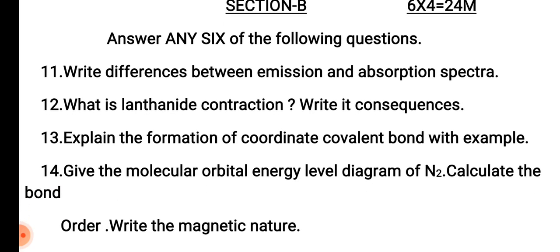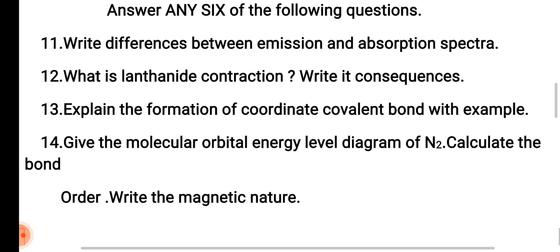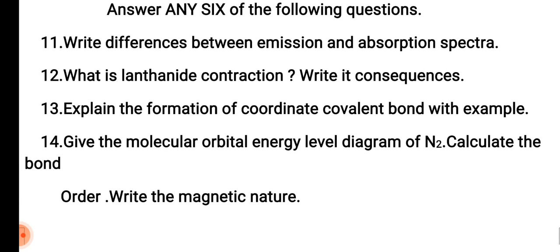Question number 14: Give the molecular orbital energy level diagram (MOED) for N2. Calculate the bond order and write the magnetic nature. The bond order comes out to a triple bond, so calculate accordingly.